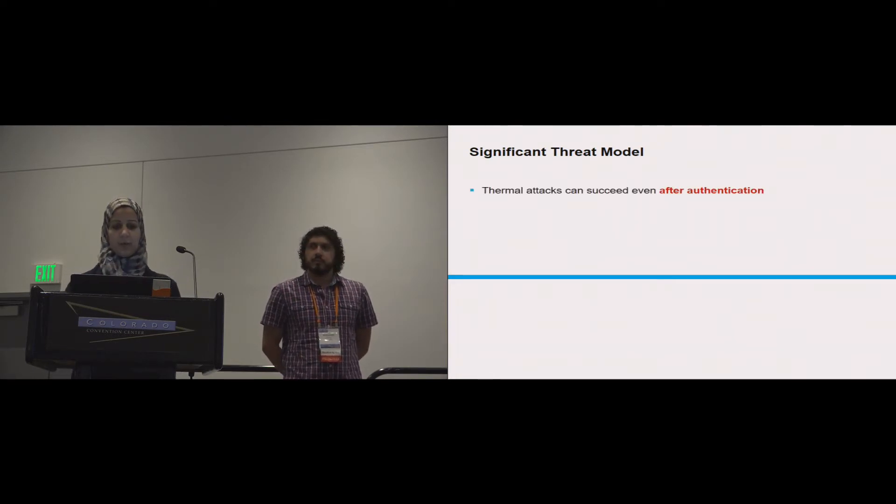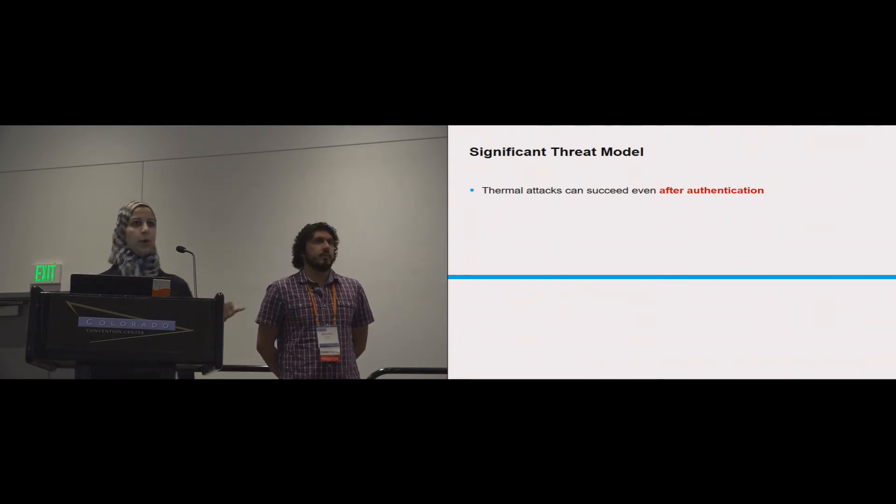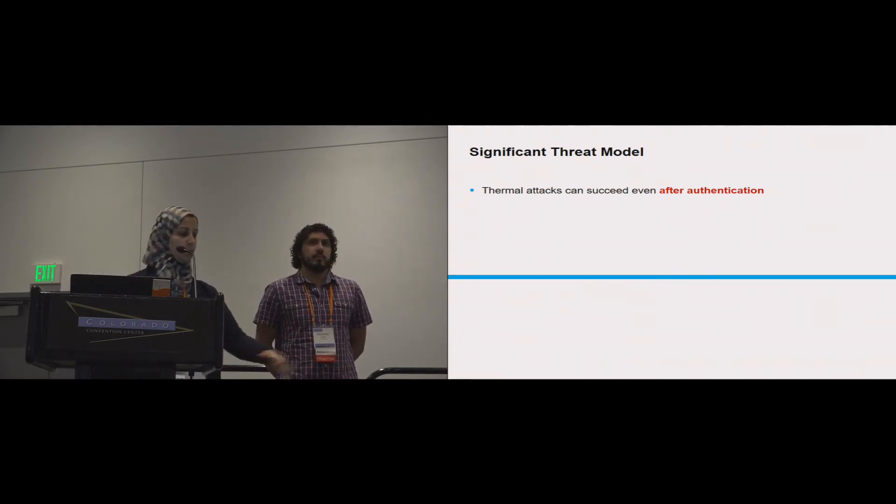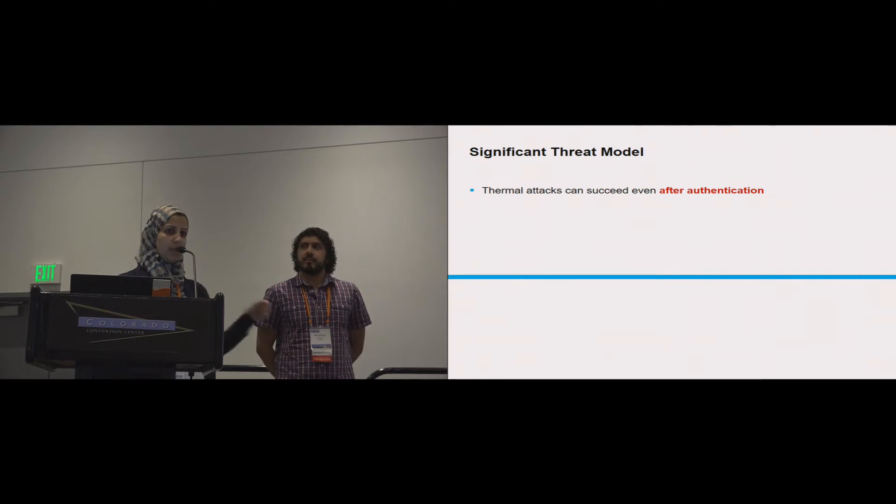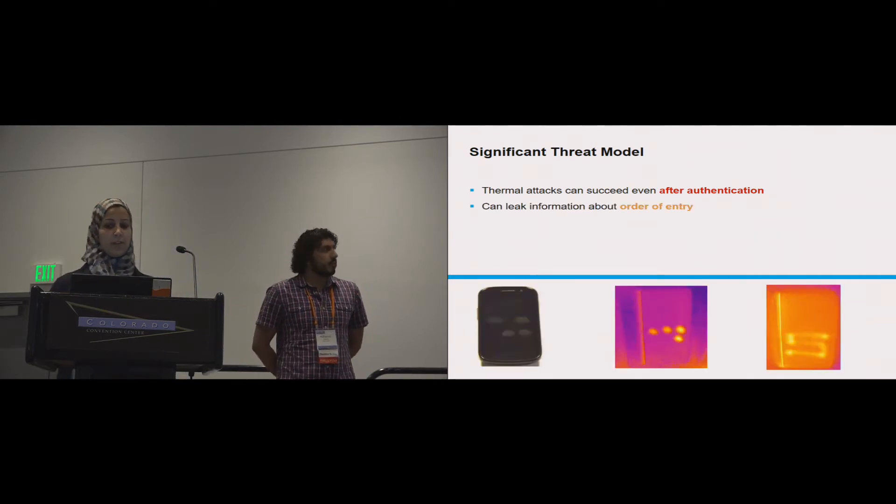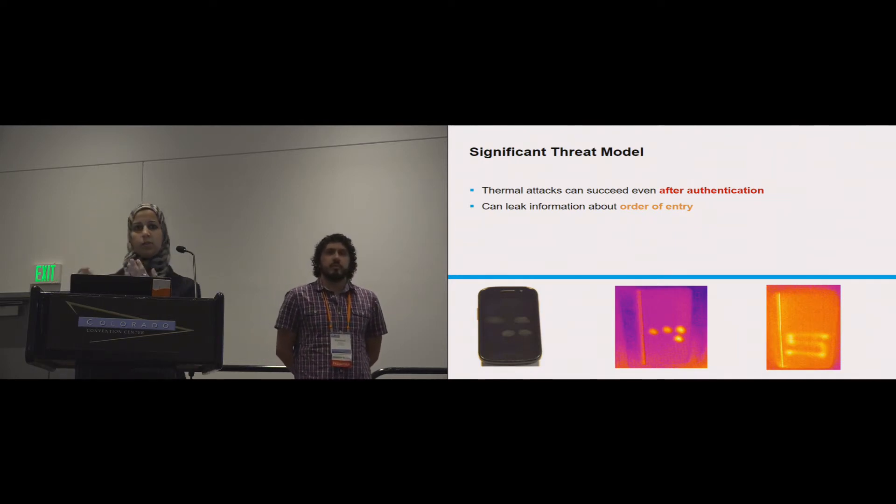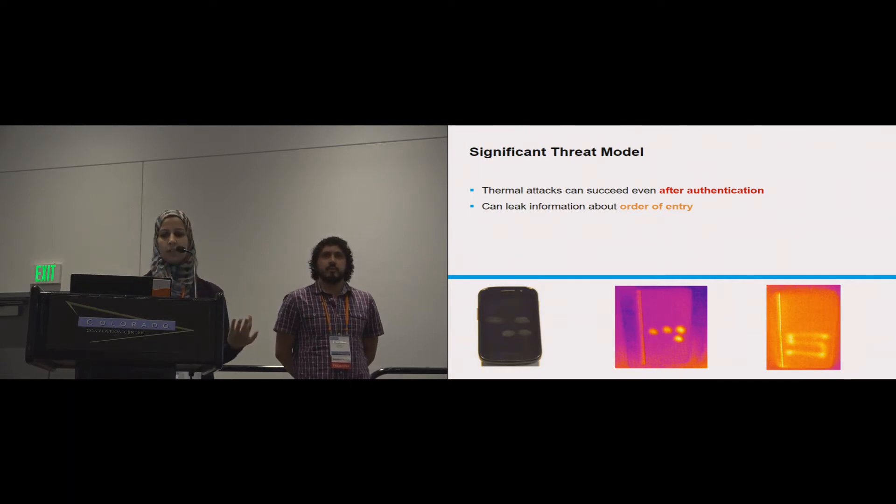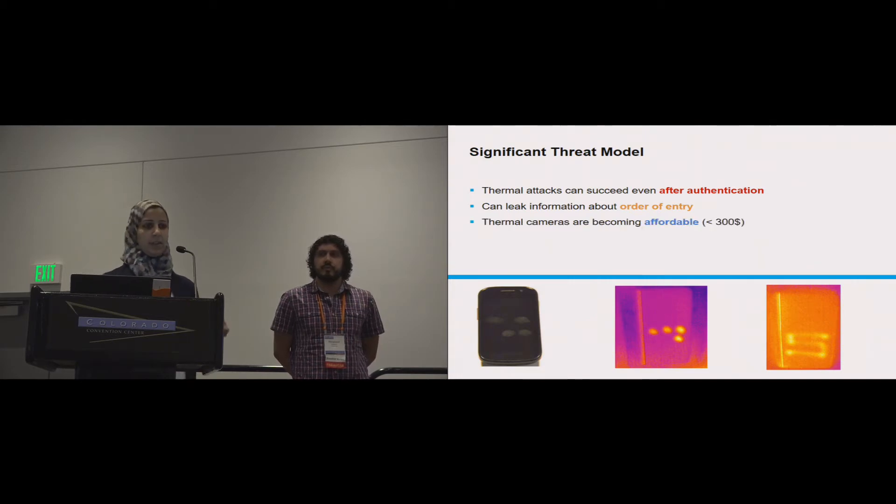What makes it a really significant attack is we can do the attack after authentication. As you've seen in the video, we actually attack the phone after you place it. You authenticate, you leave the phone, and then you leave, so you don't have to be physically there, unlike shoulder surfing where you have to be there when the user is authenticating. One other thing, we can have information about the order. With smudge attacks, at least for the PIN case, you can see where the user has pressed but you cannot actually tell which PIN was entered first, but with thermal attacks you can actually know the order of entry.